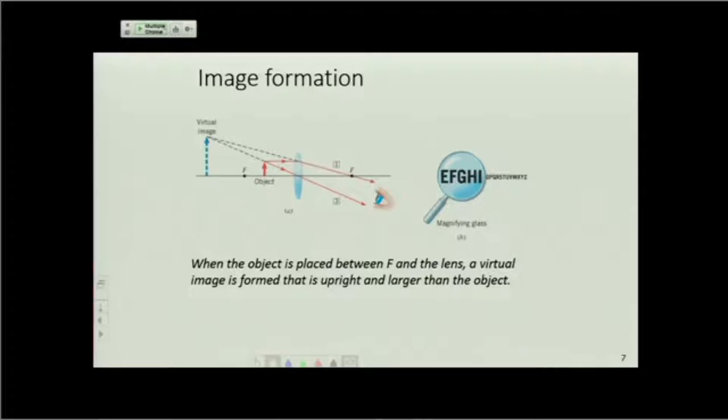You can do this with any object distance and image distance. Suppose I have an object distance that's less than f. 1 over f minus 1 over something that's less than f. Let's take, for example, object distance equals f over 2.